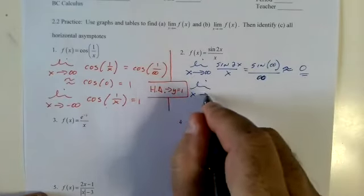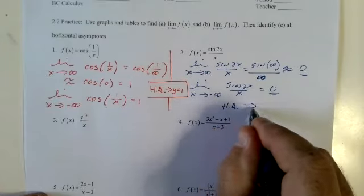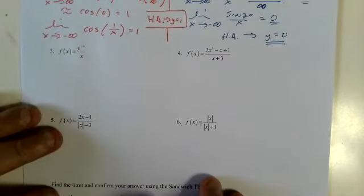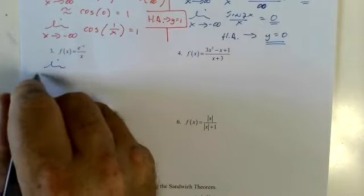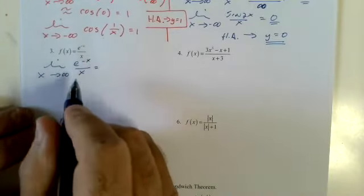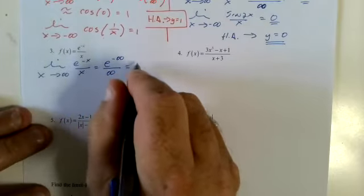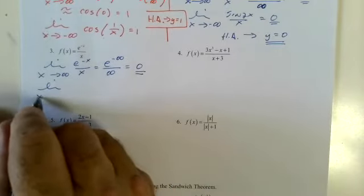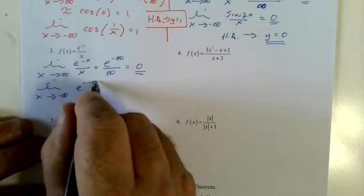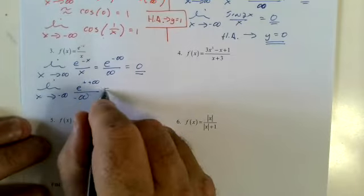Doing it from the other direction: going to positive infinity we get zero over infinity, which is zero. For negative infinity, the top is negative infinity and the bottom grows, so it goes to negative infinity.